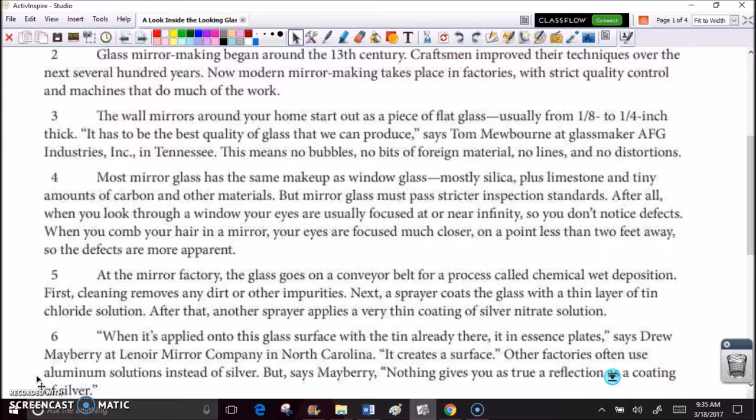At the mirror factory, the glass goes on a conveyor belt for a process called chemical wet deposition. First, cleaning removes any dirt or other impurities. Next, a sprayer coats the glass with a thin layer of tin chloride solution. After that, another sprayer applies a very thin coating of silver nitrate solution.